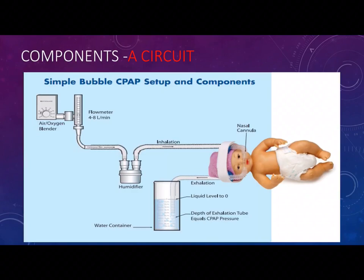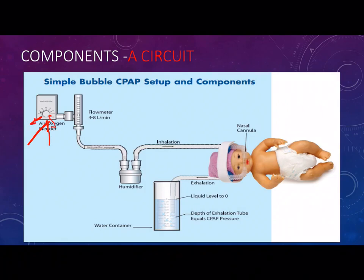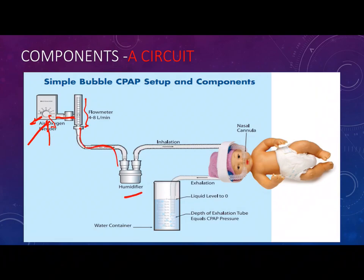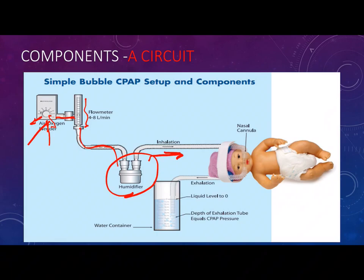Looking at the circuit: we have oxygen and air inlets going to the blender. The blender mixes oxygen and air to give us the target FiO2, starting from 21% up to 100% — though in practice we do not exceed 60% on CPAP. Then the flow meter controls how many liters to deliver to the baby, from 5 to 10 liters. From the flow meter, there is a connection to the humidifier, which warms and humidifies the gas, then sends it to the baby through the inspiratory limb, which usually has a water trap to collect any condensed water before it reaches the baby.